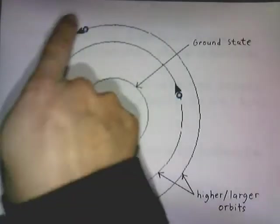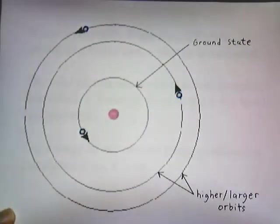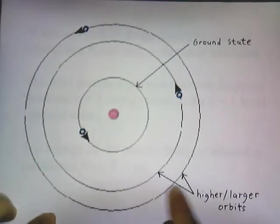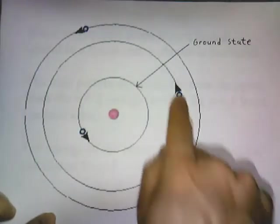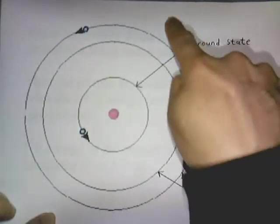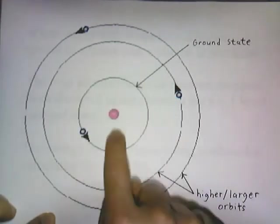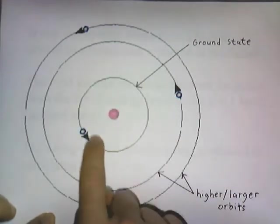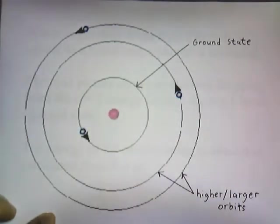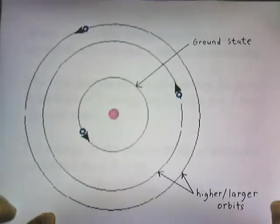Here we have the electrons orbiting the nucleus, and the electrons occupy these little circles or orbitals. The circle closest to the nucleus is called the ground state, and the ones further out are the higher or larger orbitals.